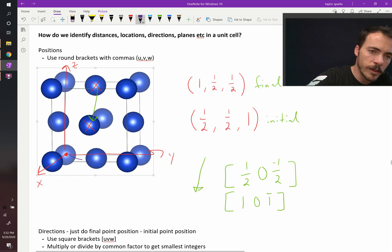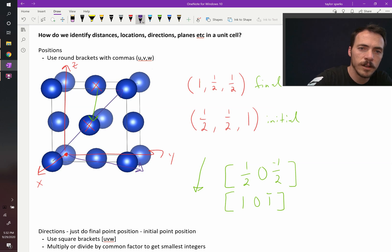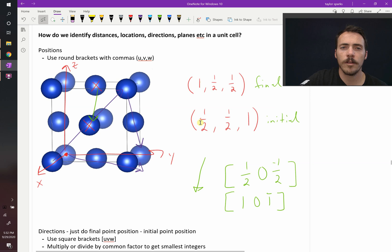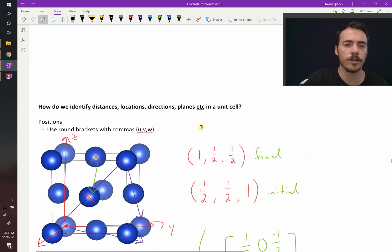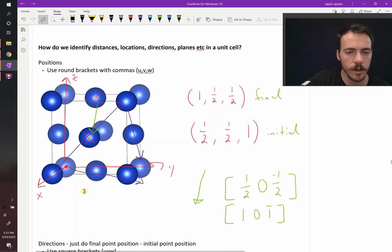This direction right there that cuts across the face diagonal should be in the same family as this one that cuts across the face diagonal, right? This one that cuts across the face diagonal. Those should all be in the same family. So what do we do about those? The ones that are in the same family, we write them with pointed brackets out the side. So you'd pick the direction of one of those, like this one. What does this one do?